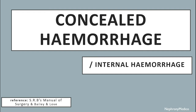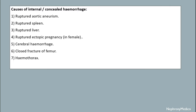Hello and welcome. Let's talk about concealed hemorrhage, also called internal hemorrhage. The causes of internal or concealed hemorrhage include ruptured aortic aneurysm, ruptured spleen, ruptured liver, ruptured ectopic pregnancy, cerebral hemorrhage, closed fracture of femur, and hemothorax.